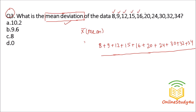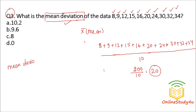There are 10 terms. The total sum is 200, so the mean is 200 divided by 10, which equals 20. Mean deviation is the sum of |X minus X-bar| divided by N — that is, the absolute deviation of each value from the mean.